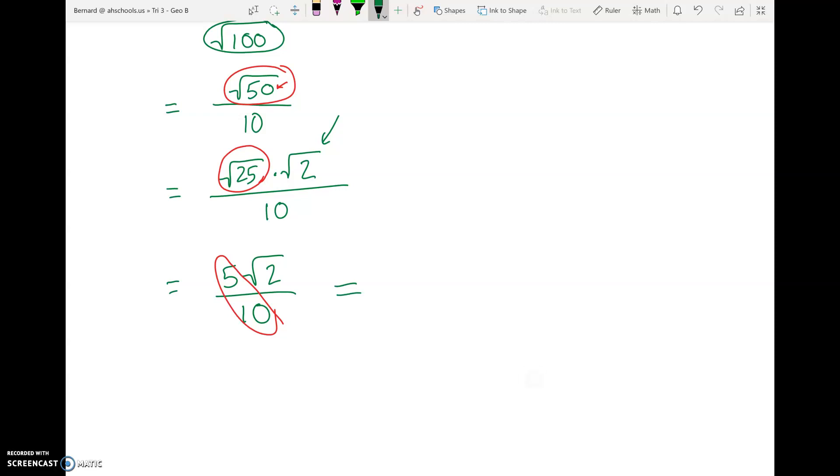And so we can write this as 1 times the square root of 2 over 2. Again, the reason is 5 over 10 is equivalent to 1 over 2. So we just reduce that fraction.